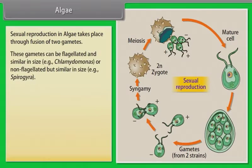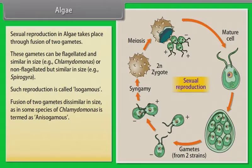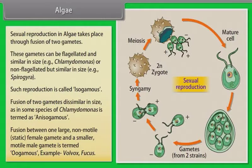Sexual reproduction in algae takes place through fusion of two gametes. These gametes can be flagellated and similar in size, example: Chlamydomonas, or non-flagellated but similar in size, example: Spirogyra. Such reproduction is called isogamous. Fusion of two gametes dissimilar in size as in some species of Chlamydomonas is termed as anisogamous. Fusion between one large, non-motile, static female gamete and a smaller, motile male gamete is termed oogamous. Example: Volvox, Fucus.